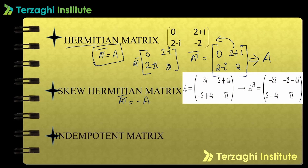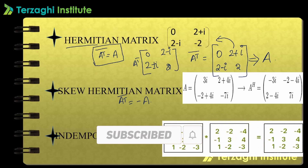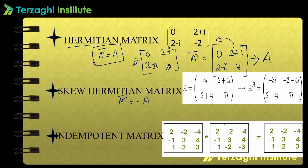Next is the idempotent matrix. In an idempotent matrix, when the matrix is multiplied by itself, you get the same matrix back. That is, A squared equals A. When you multiply the given matrix by itself, you get the same given matrix. This is the condition for an idempotent matrix.